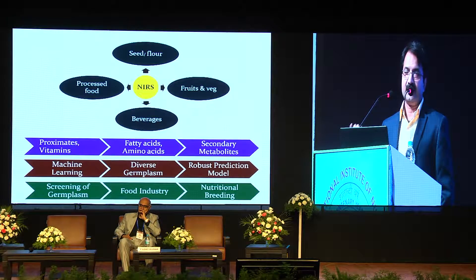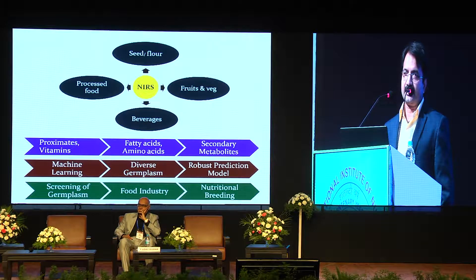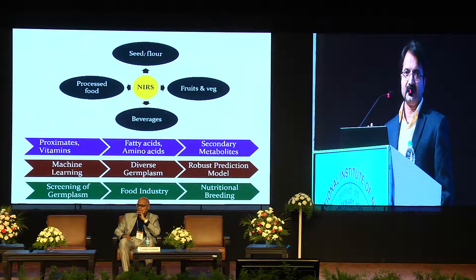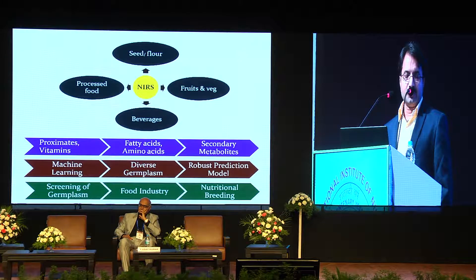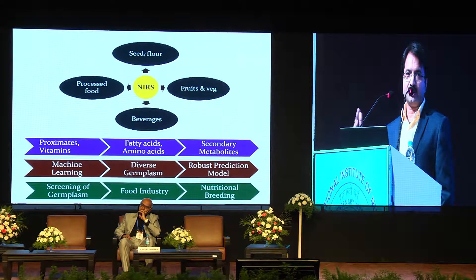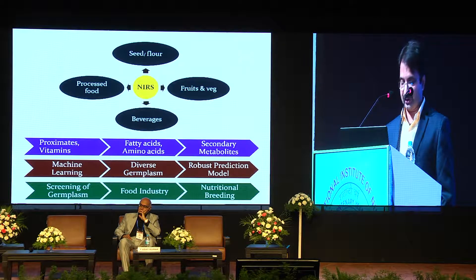NIR is a machine learning technique where the computer learns from spectral data and wet chemistry data. Where there is a dipole moment between two atoms, the interaction is captured. Once learned from diverse samples with a wide range of variation, the learning is good and we can get a robust prediction model. This model can be used for screening of germplasm, by food industries for quality assessment of raw materials, and by breeders in nutritional breeding programs to track inheritance of nutrient traits.